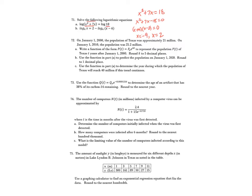For part B, add log base 4 of (x - 6) to the other side to get log base 4 of x plus log base 4 of (x - 6) equals 2. Combine into a single log: log base 4 of x(x - 6) equals 2, so x² - 6x equals 2. Write in exponential form: x² - 6x equals 4 to the second power, which is 16. So x² - 6x - 16 equals 0.